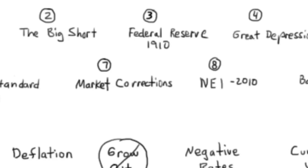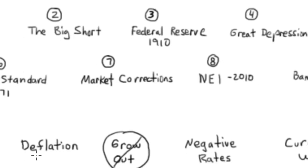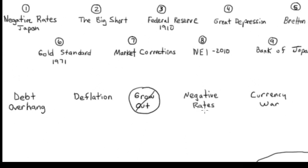Before I do, I just want to make a couple comments. Number one, you can see these themes that we are covering throughout this series: debt overhang, deflation, we can't grow out of it, negative interest rates, and a currency war.